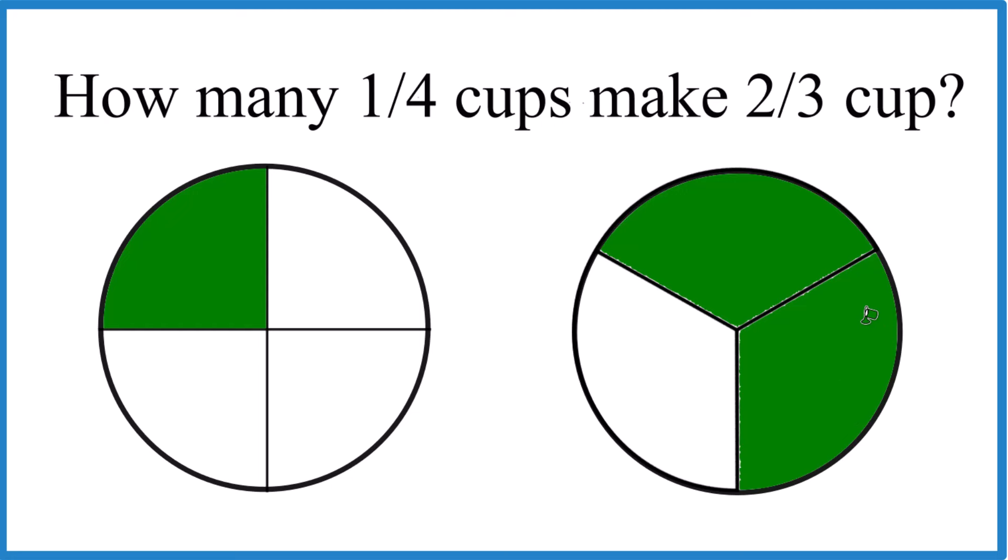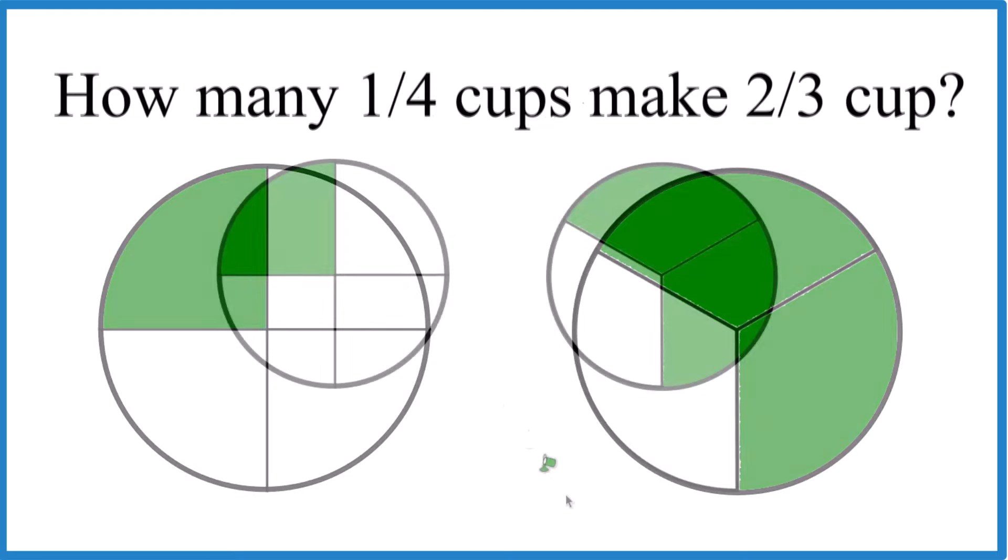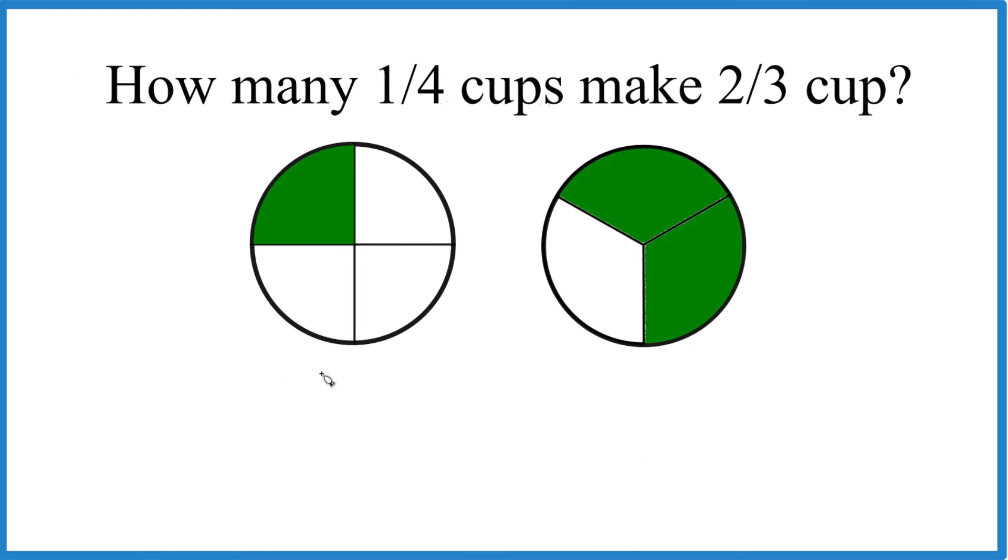So it's probably better to do it mathematically. And here's how we can do that. So we're taking two-thirds and essentially dividing it by one-fourth. That'll tell us how many times one-fourth goes into two-thirds.